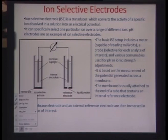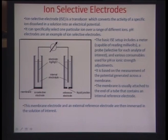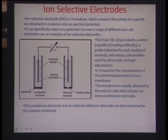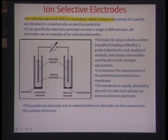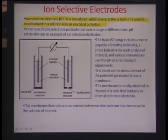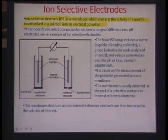We are very often faced with the problem of detection where there are more than one competing ions in a solution, and we want to find out a particular ion of interest. The ion selective electrode is a transducer which converts the activity of a specific ion dissolved in a solution into an electric potential — even though there are more than one ion type in solution, only the ion of interest is reported.